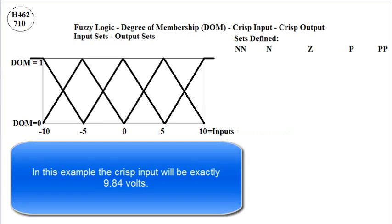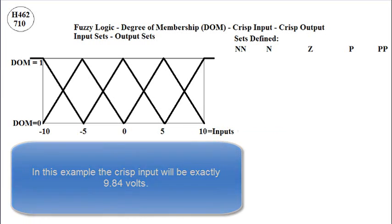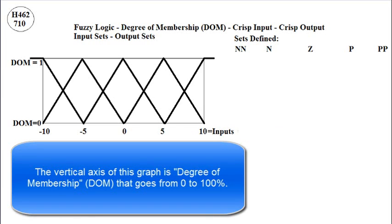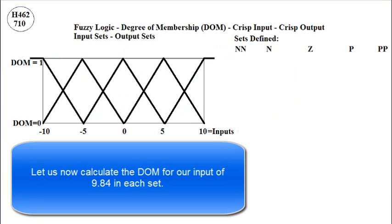In this example, the crisp input will be exactly 9.84 volts. The vertical axis of this graph is degree of membership, which goes from zero to one. Let's now calculate the degree of membership for our input of 9.84 in each set.